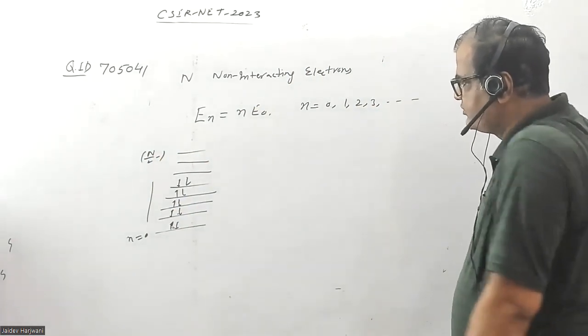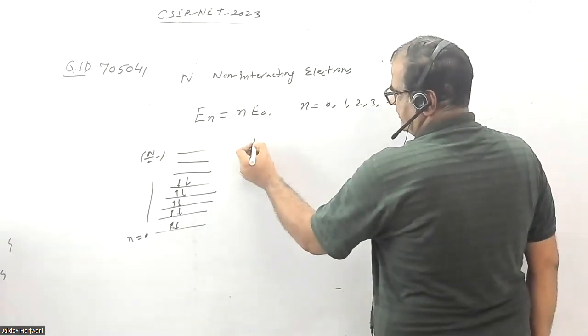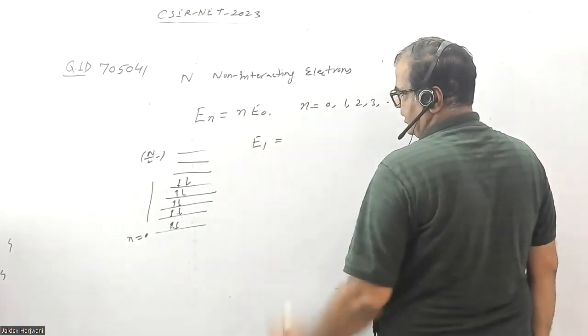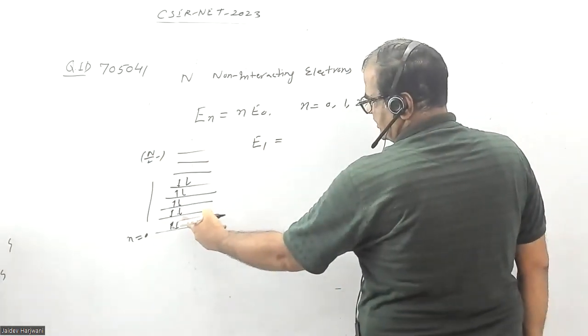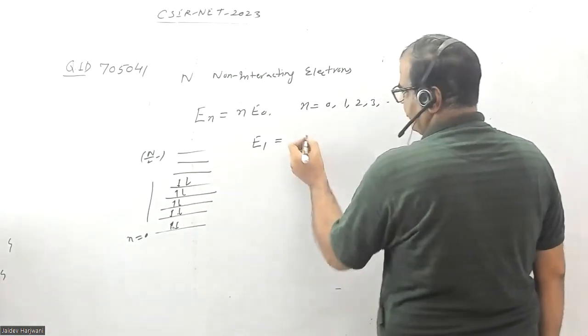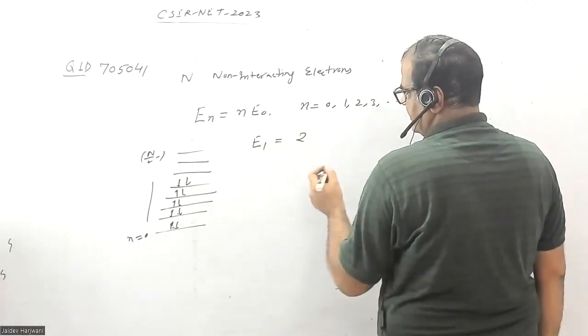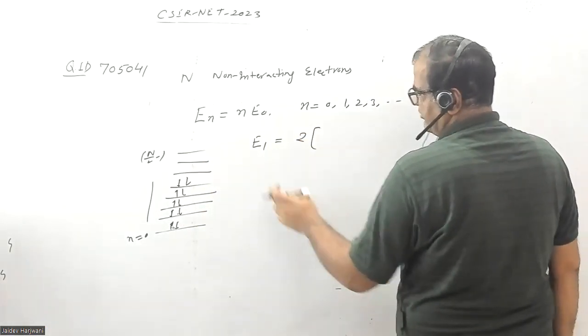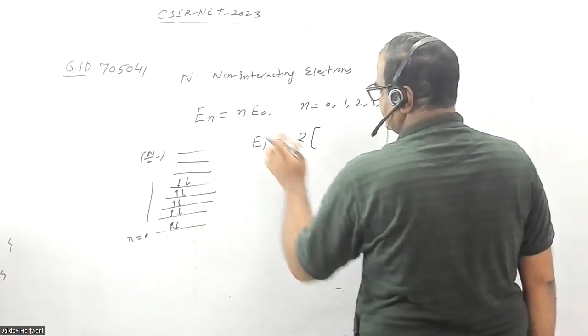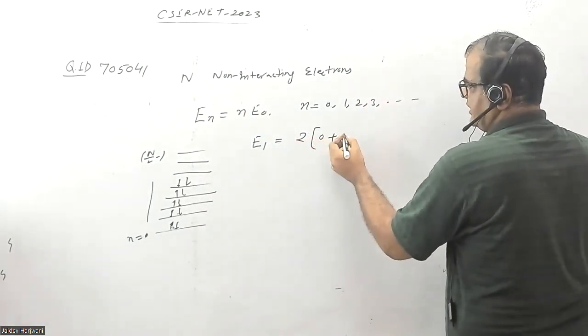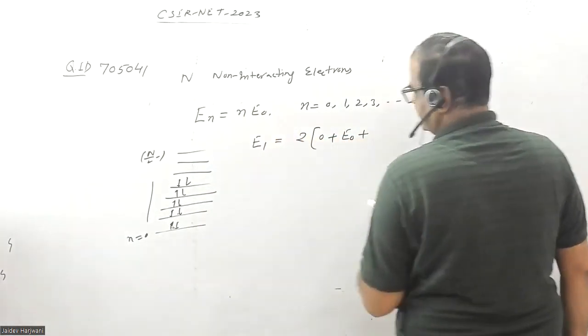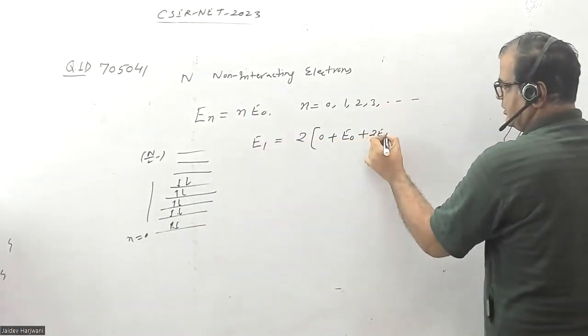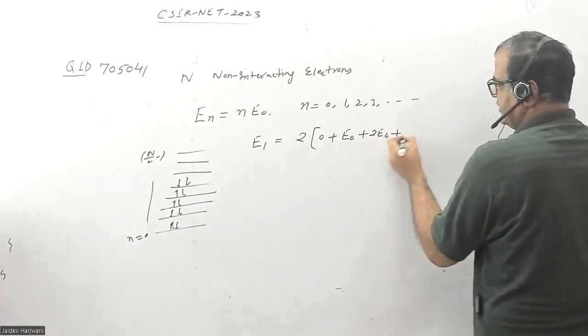Now let us calculate the ground state energy of this system, say the ground state energy is E1. Your ground energy will be, because there are two electrons in each level, I have to multiply by two each level. The energy will be: first level energy will be n is 0, this will be 0; second case will be E0; third case it will be 2E0. Already multiplied here, so this is 3E0.